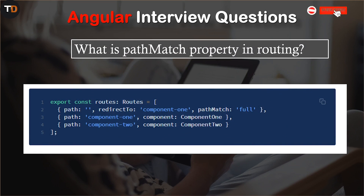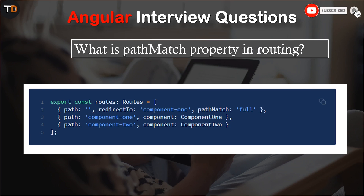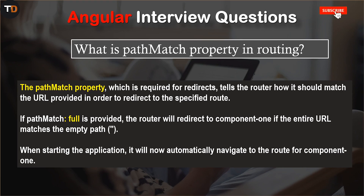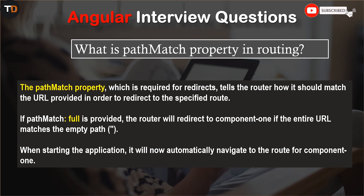Here we assign three routes and we are redirecting to component one, using pathMatch equal to full. The pathMatch property, which is required for redirects, tells the router how it should match the URL provided in order to redirect to the specified route. If pathMatch is 'full', the router will redirect to component one if the entire URL matches the empty path.